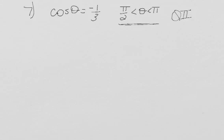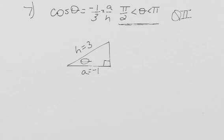So knowing that cosine of theta is negative one-third, we can draw a right triangle, identify theta, and label our adjacent and hypotenuse as negative one over three because cosine of theta is adjacent over hypotenuse.